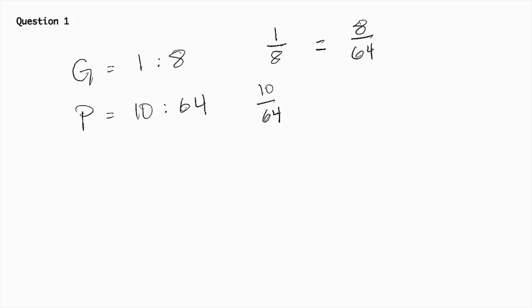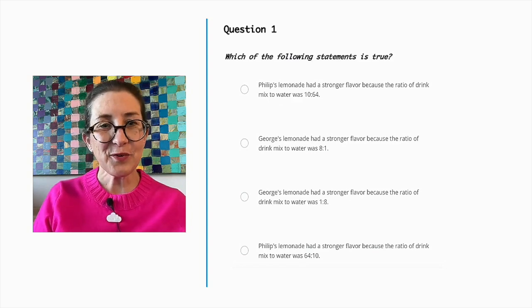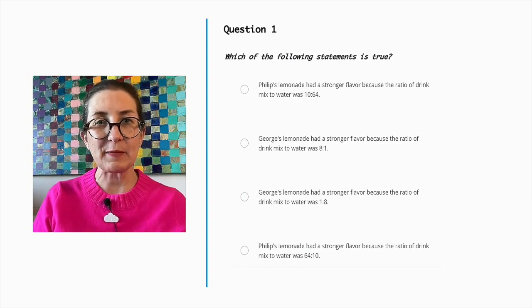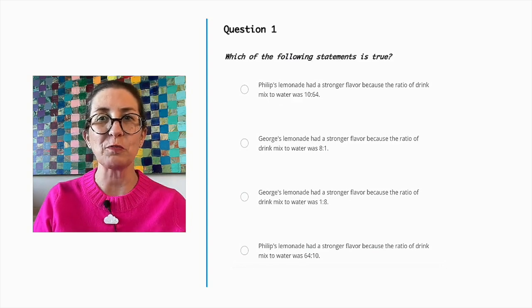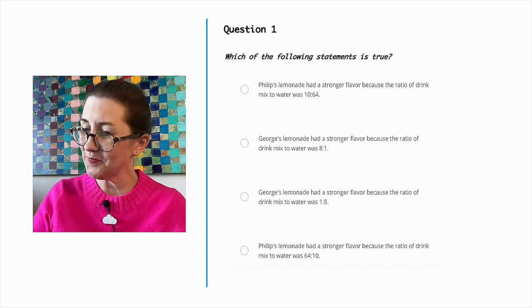10 over 64 is greater than 8 over 64. So Philip's lemonade had a stronger flavor, as he used more drink mix per ounce of water.